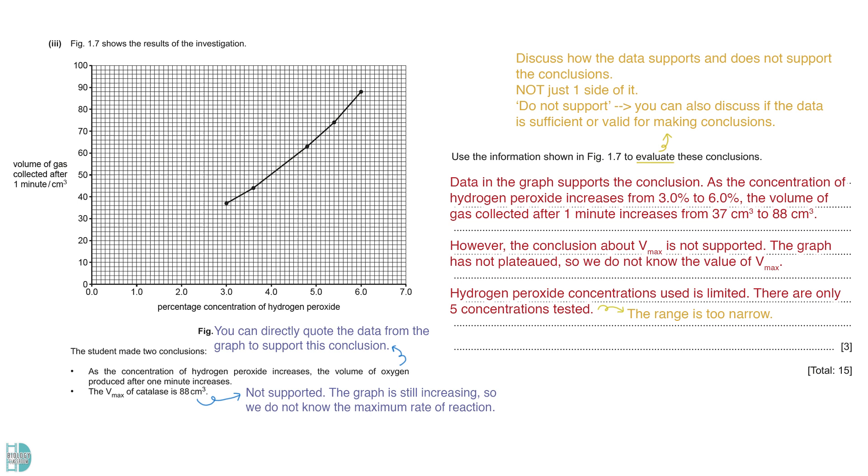Besides, the data may not be sufficient to conclude. Only 5 concentrations of hydrogen peroxide are being used. We do not know if the trend is the same if we use a wider range of concentrations. The reliability of the data is low too. There are no replicates made for means calculation. Lastly, we can't prove that all the gas collected is oxygen. Other gases might be collected and measured, decreasing the validity of the data.